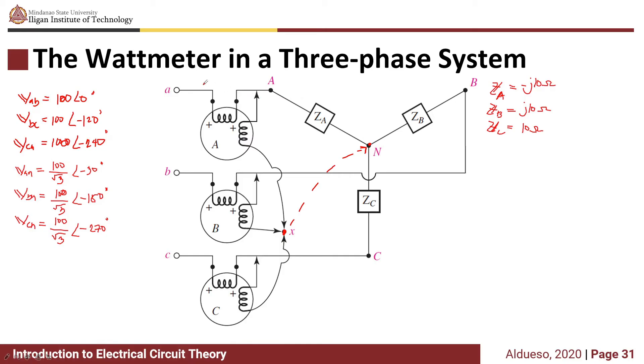Now solving for the values of IAA, IBB, and ICC, we have IAA = 19.32∠15°, IBB = 19.32∠165°, and ICC = 10∠-90°.